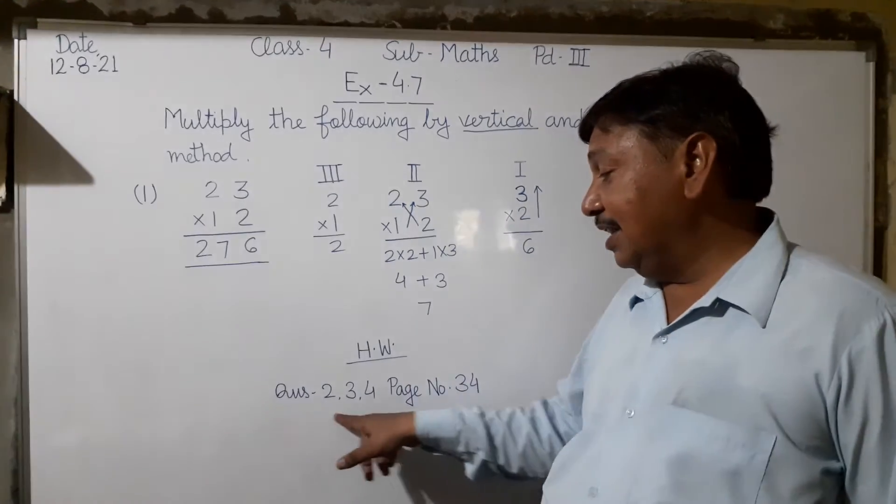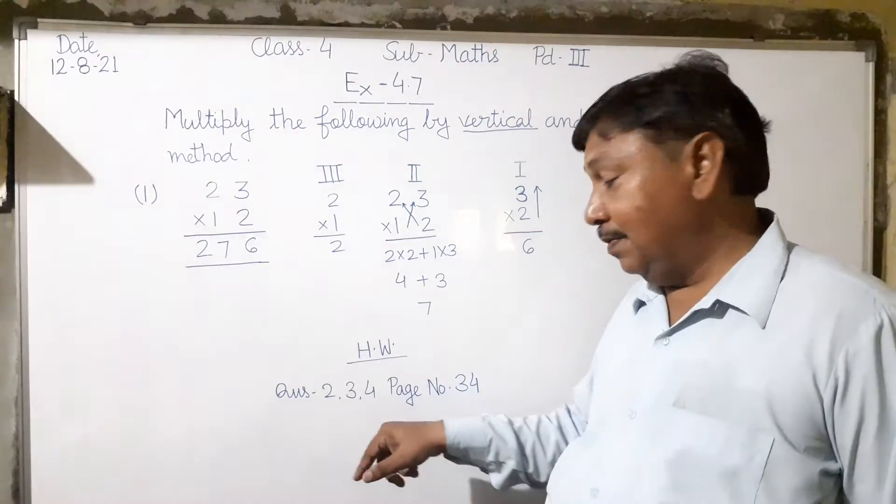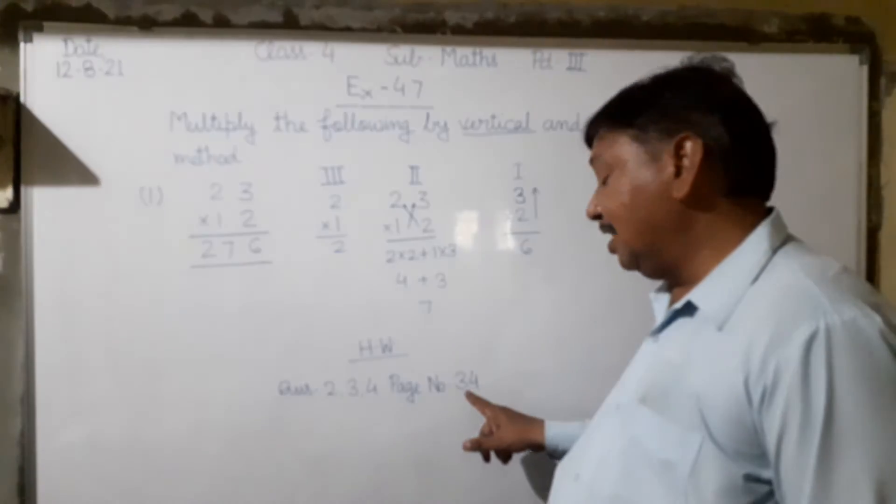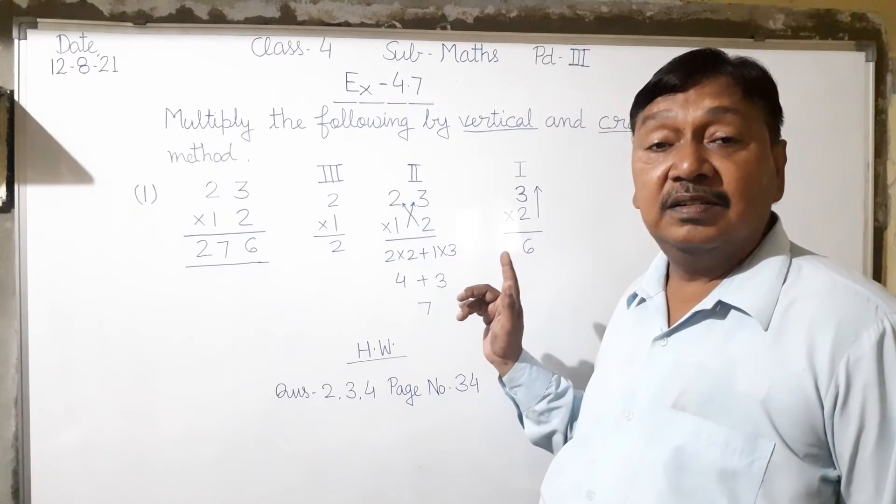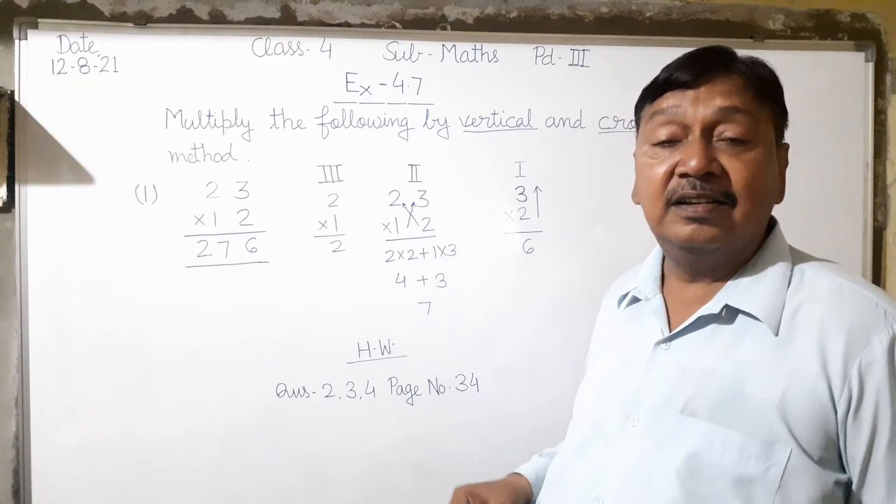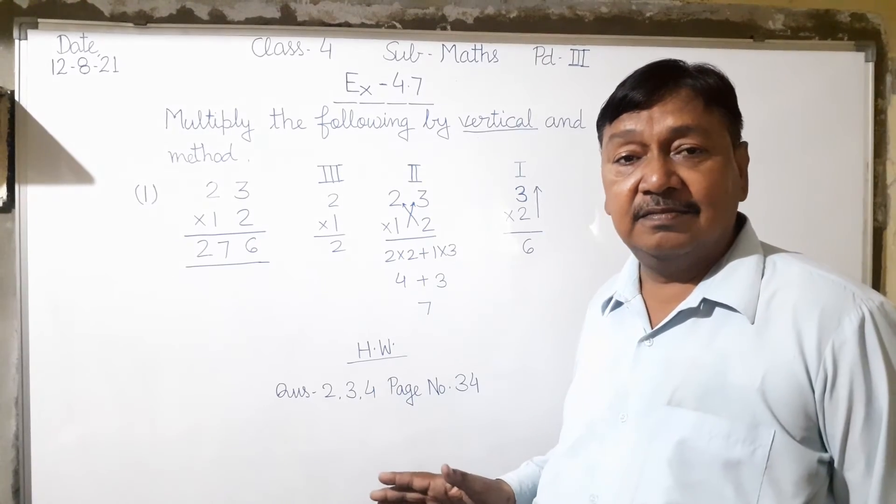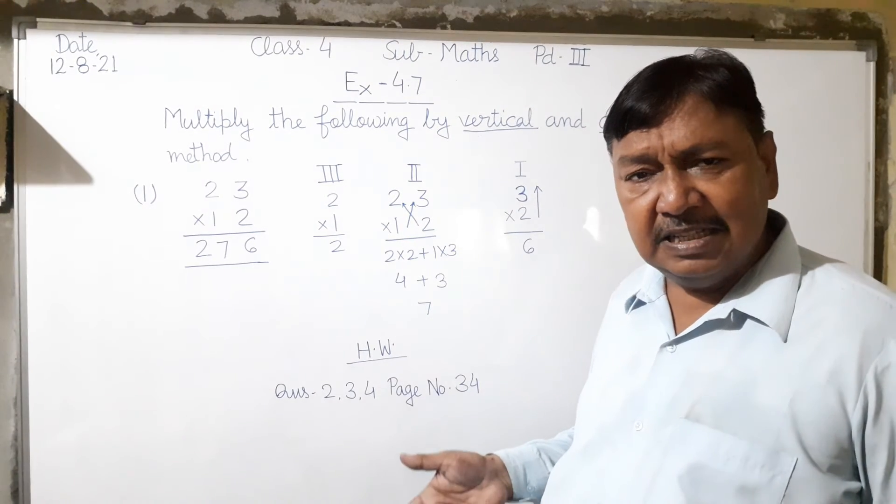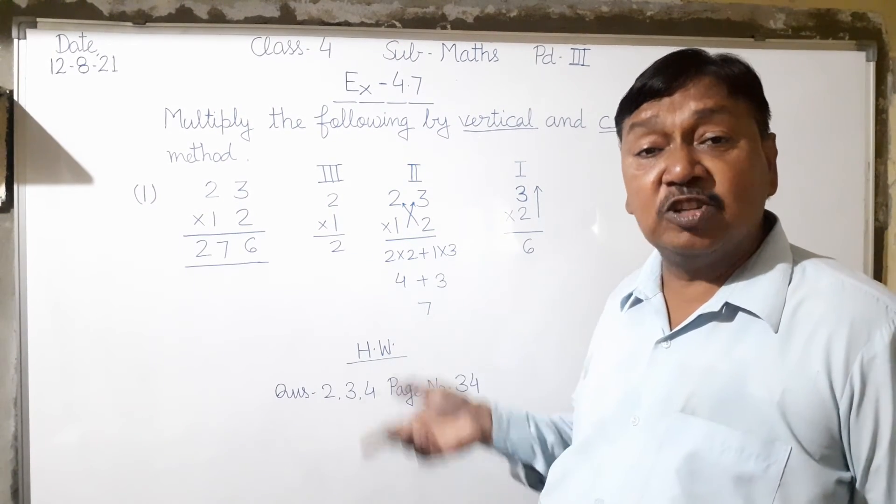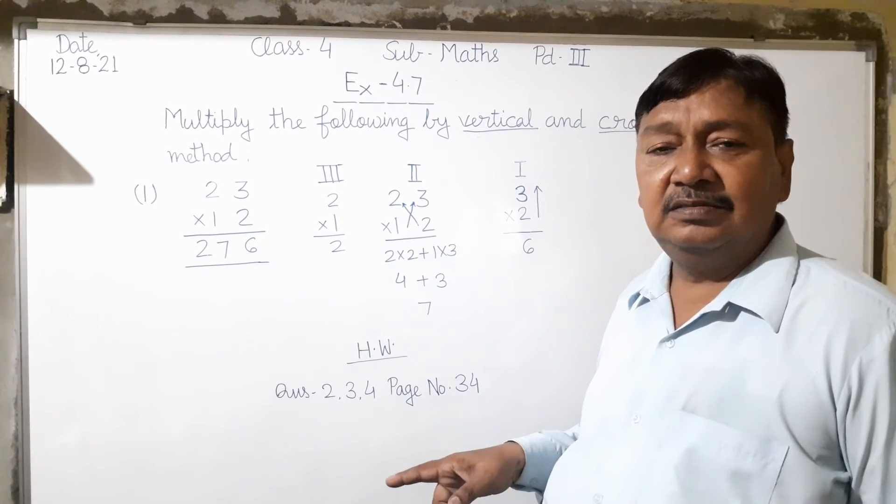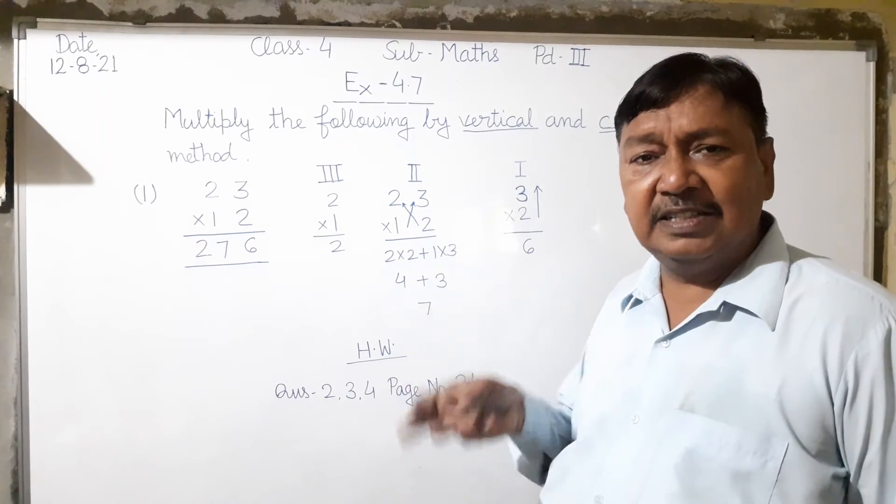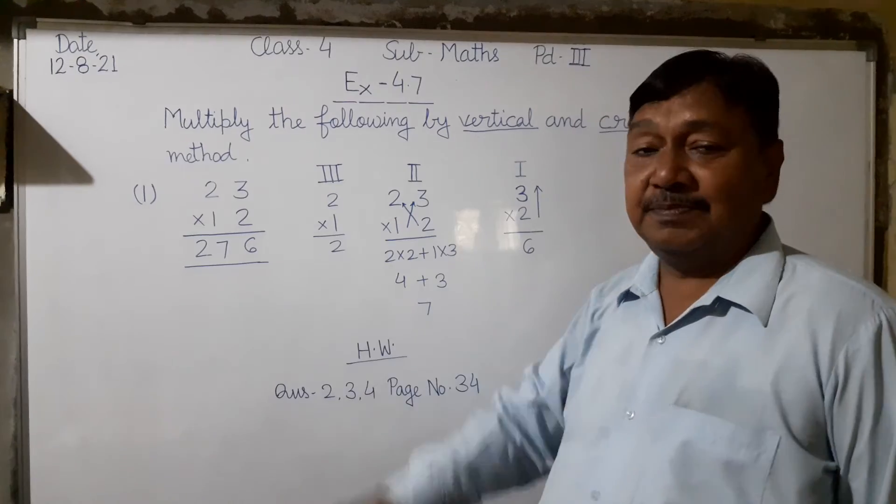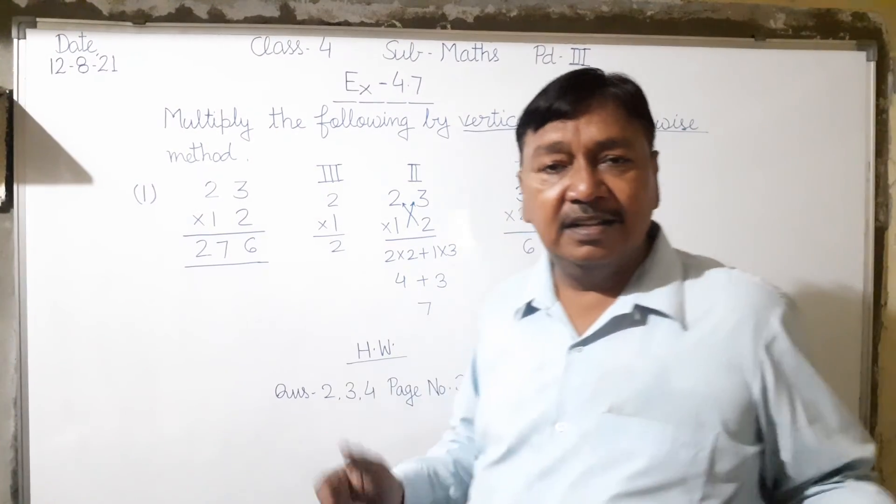Question number 2, 3, 4, page number 34. This is the vertical and crosswise method, completed in three steps: first step, second step, third step. Okay, thanks.